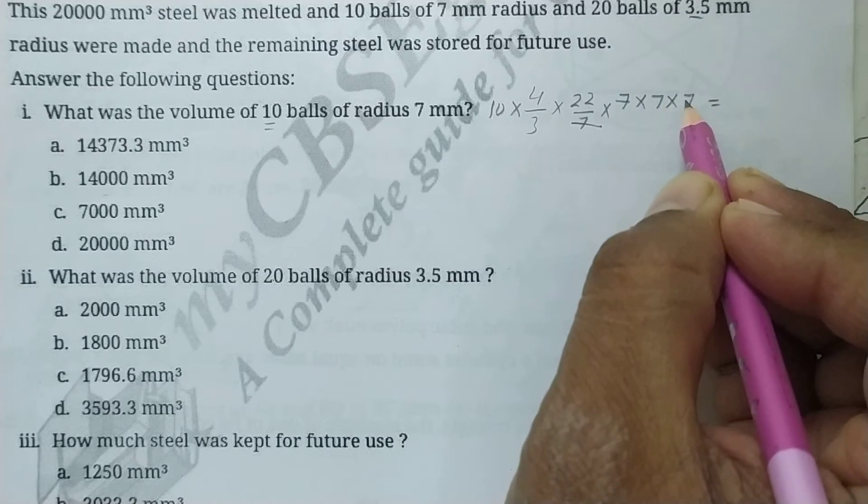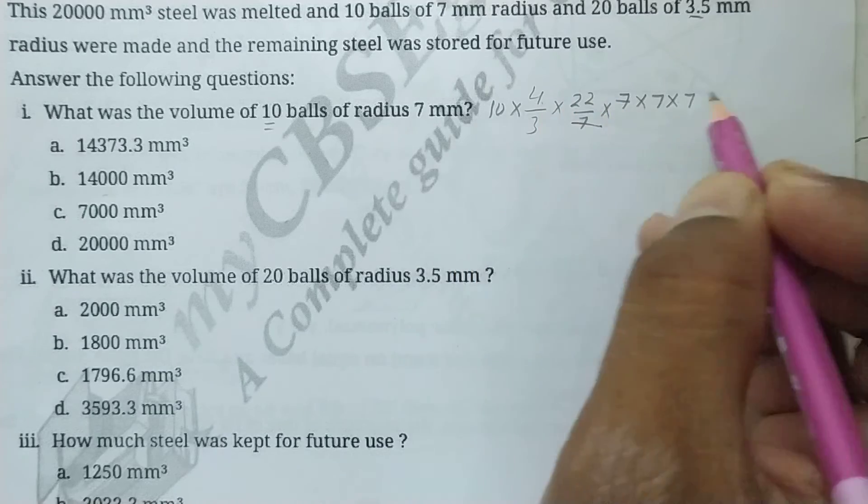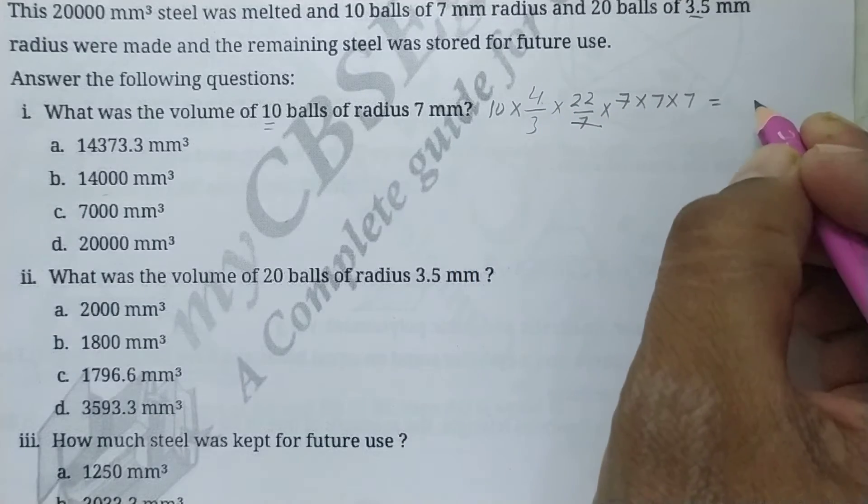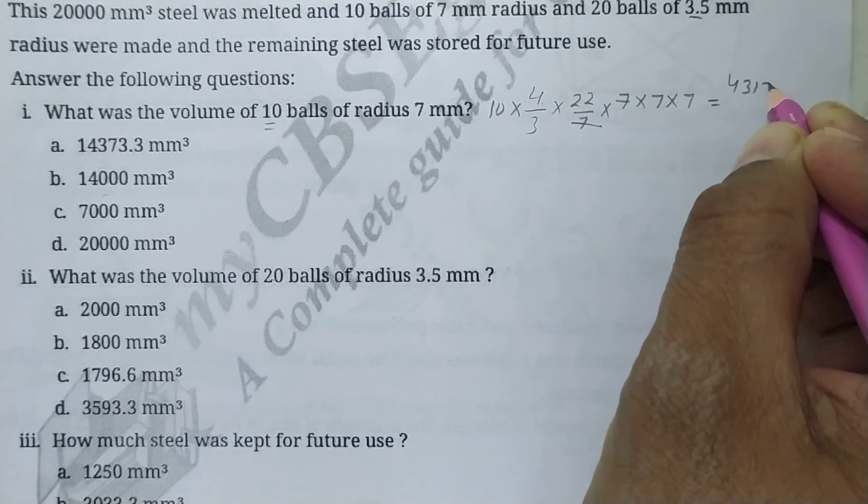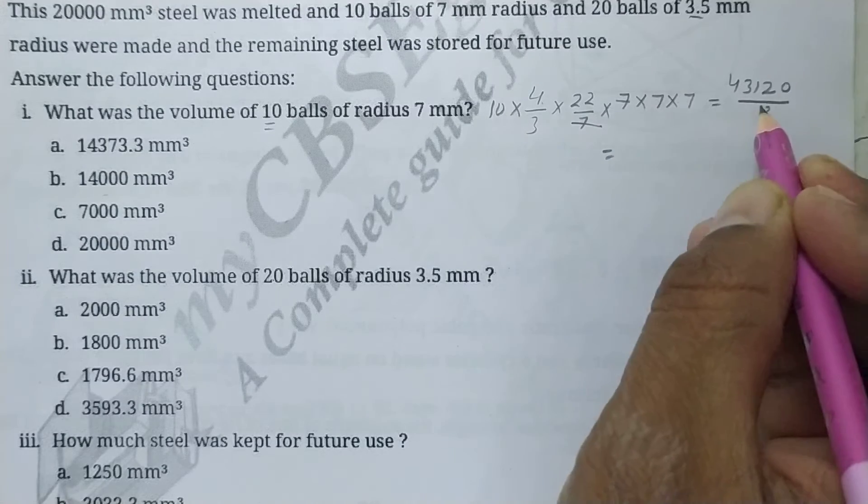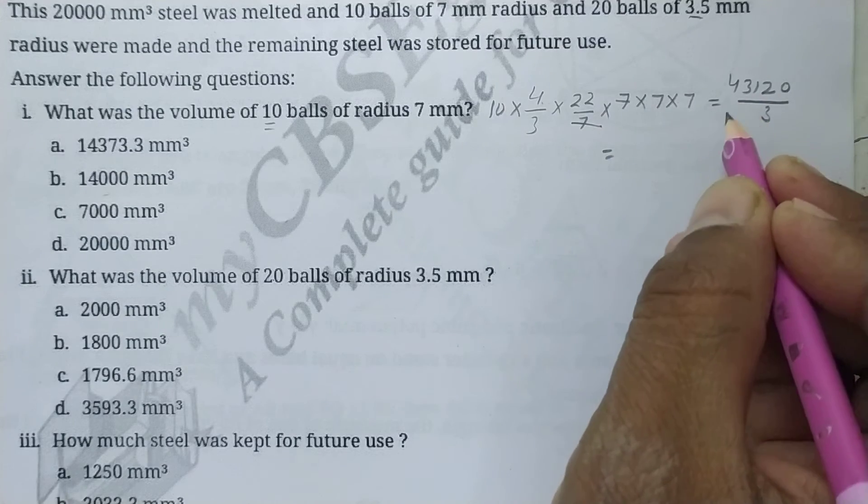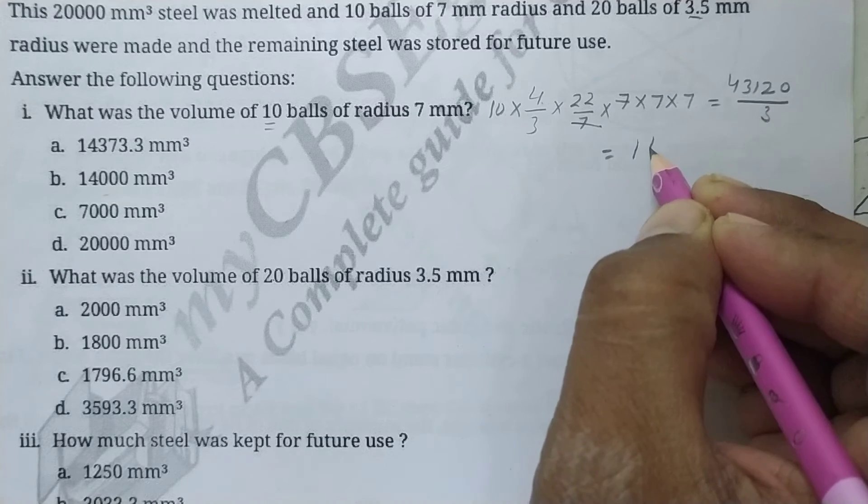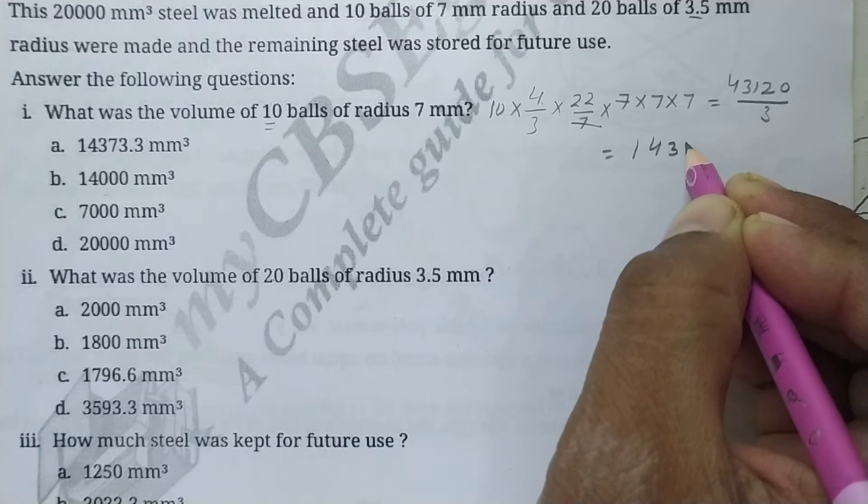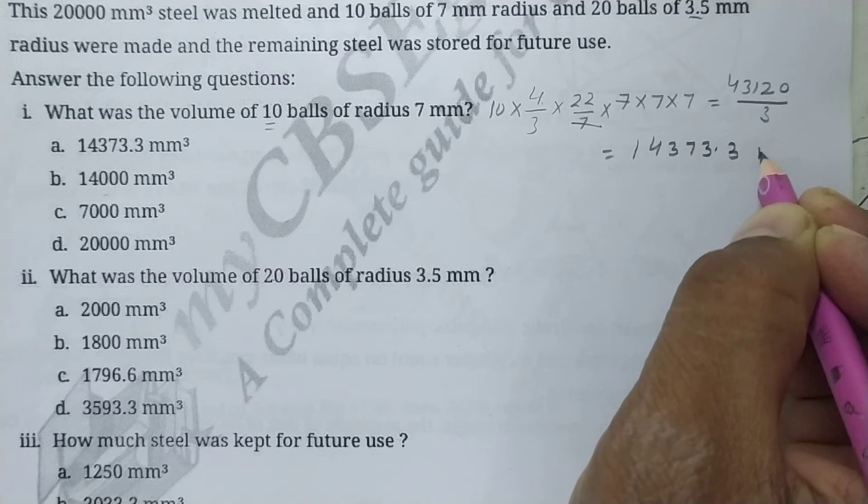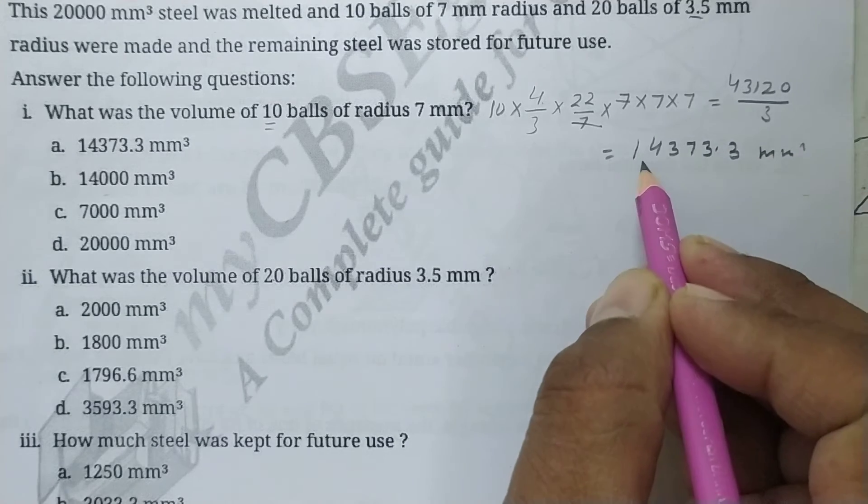So 49 into 88 will be 4, 3, 1, 2, and into 10 is this over 3. So if you divide this, 3 ones are 3, 3 fours are 12, 3 sevens, 3 point 3, 3 threes are 9, 9, 9, 9. This is 14,373.3 millimeter cube, volume of 10 balls of radius 7 mm.